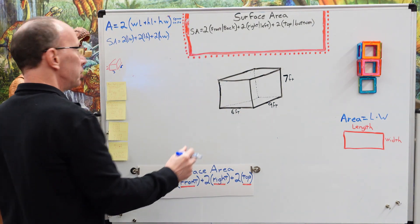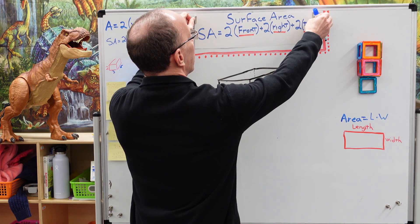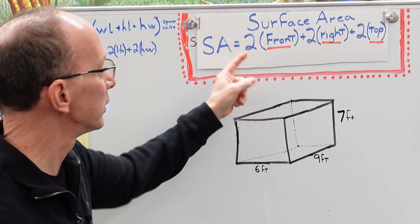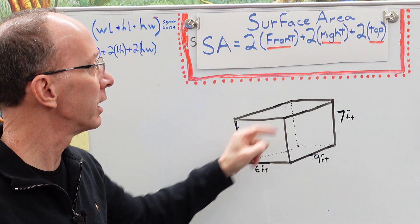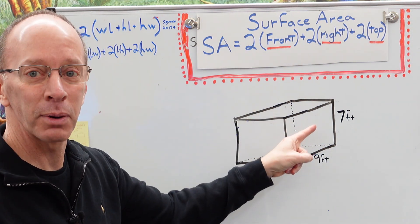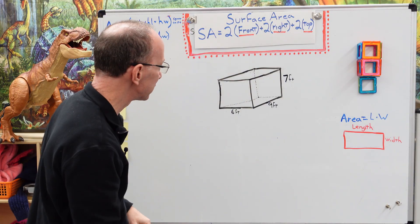So you get to choose which one you want. So I made it a little bit simpler on this formula right here and that is surface area equals two times the front. This, that is this part right here plus two times the right. That's this part right here plus two times the top. All right, let's get started here.